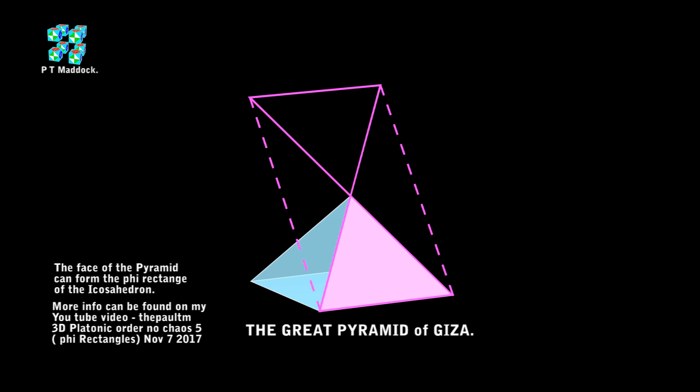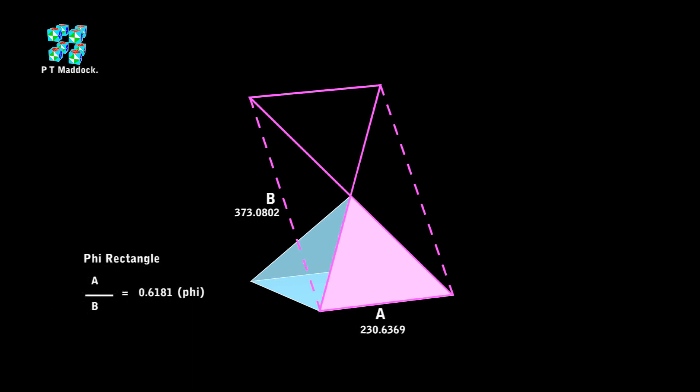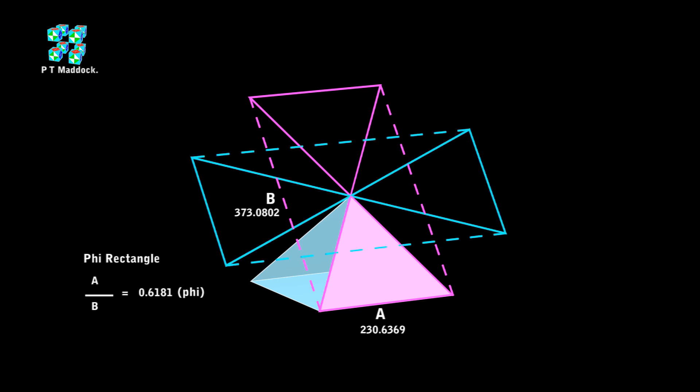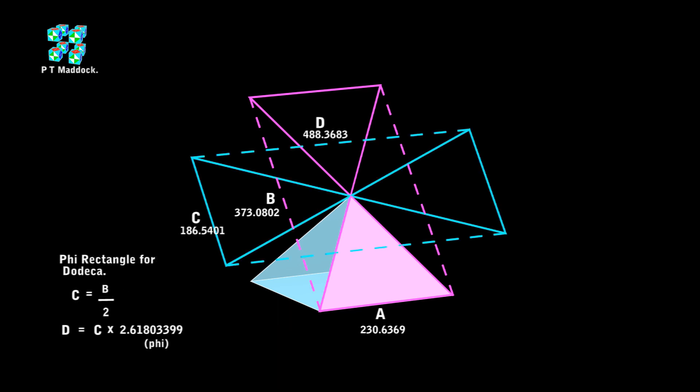Let's take a look at some of the measurements of this rectangle. This measurement shows phi — it's pretty close, within four decimal places. Now I'll bring in the rectangle for the dodeca, and I can give you some dimensions for this rectangle. You can see that the dodeca rectangle and the icosa rectangle are interrelated with simple mathematical equations.